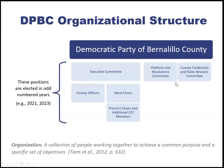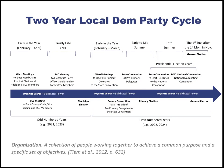Here's the overall structure of a county party. We have an executive committee whose members are the county officers and the ward chairs. Wards have ward chairs, precinct chairs, and additional county central committee members. We also have platform and resolution committee members and county credentials and rules revision committee members. These positions were just elected during the last couple of months in our ward meetings — they're elected in odd-numbered years.